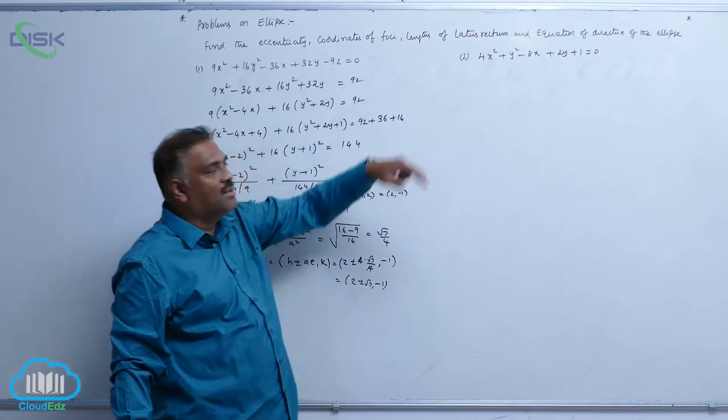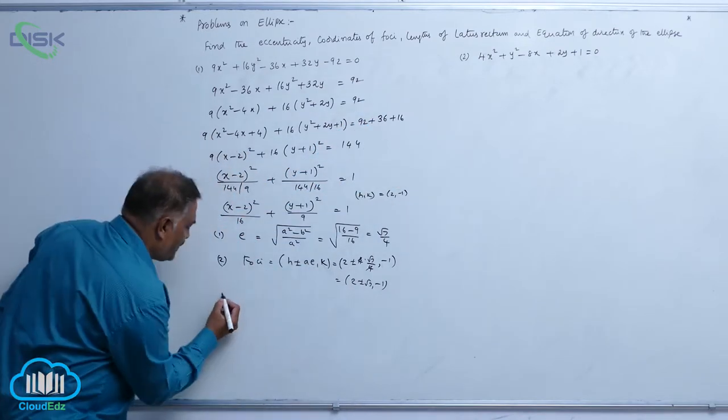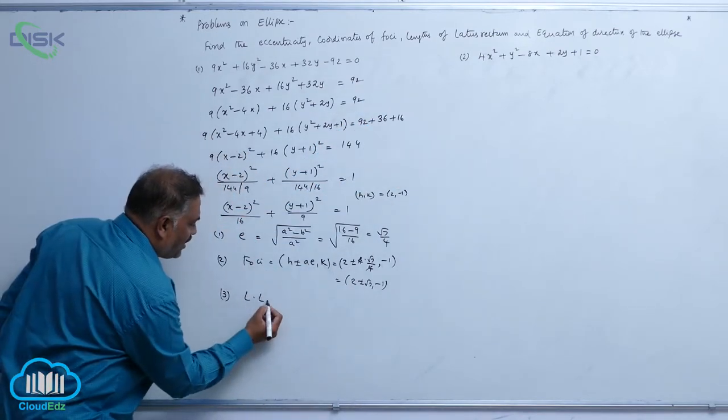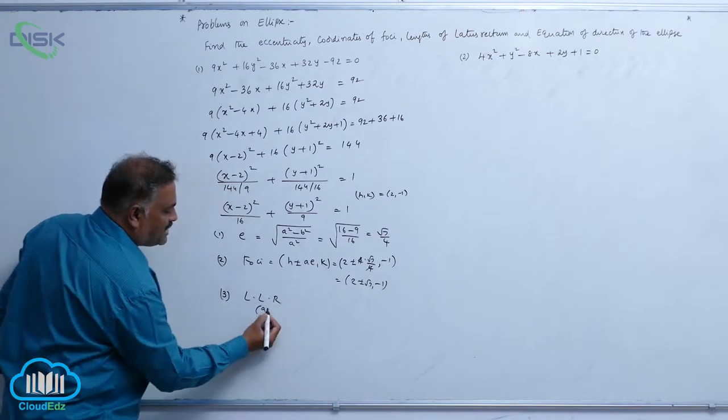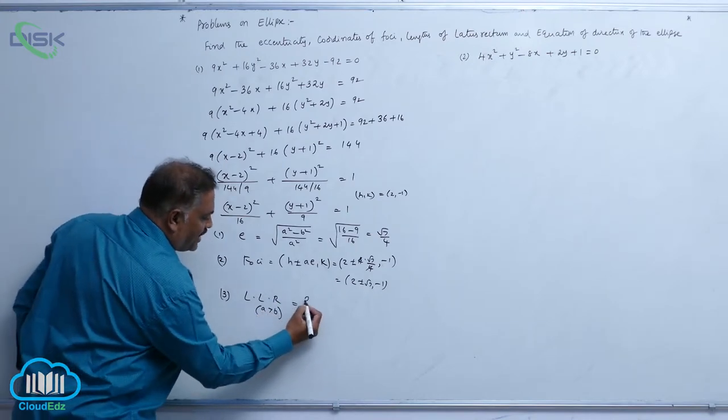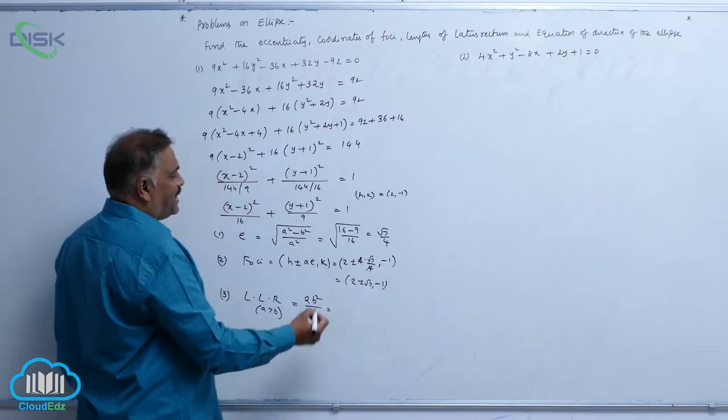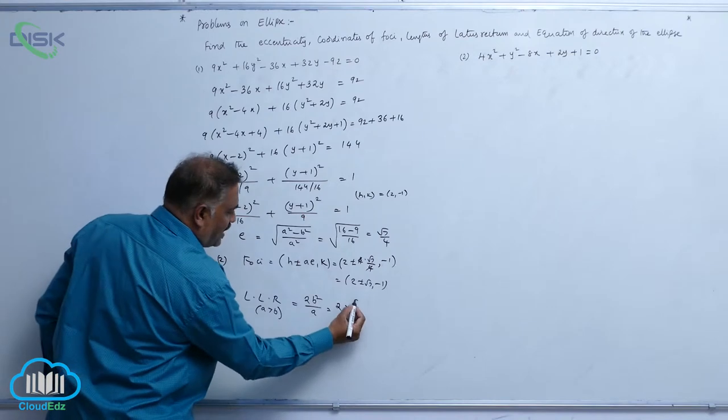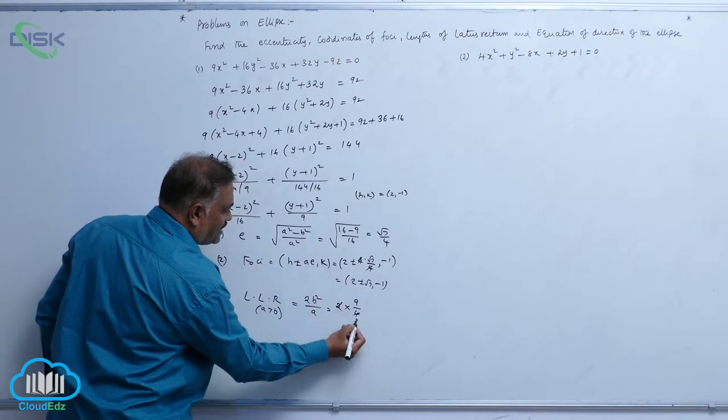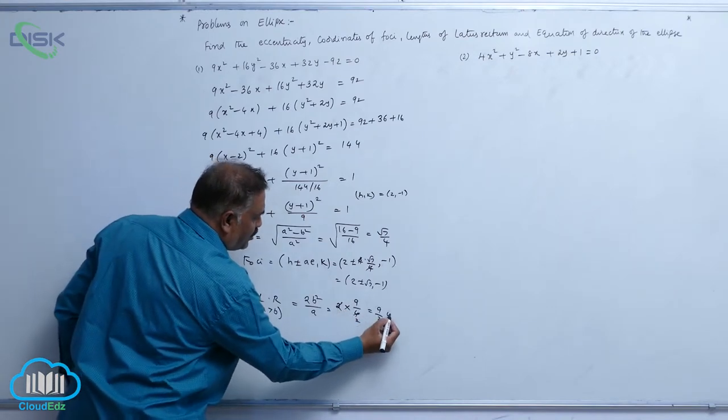Our third point is length of lattice rectum. So LLR is equal to, since a is greater than b, formula is 2b square by a, that is 2 into b square is 9, a is 4. 2, 4 cancel, this is 9 by 2 units.